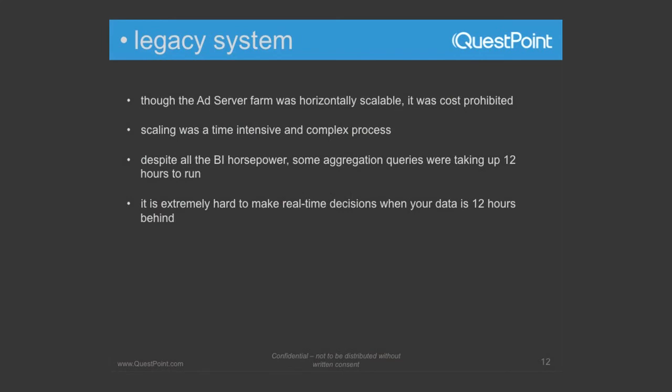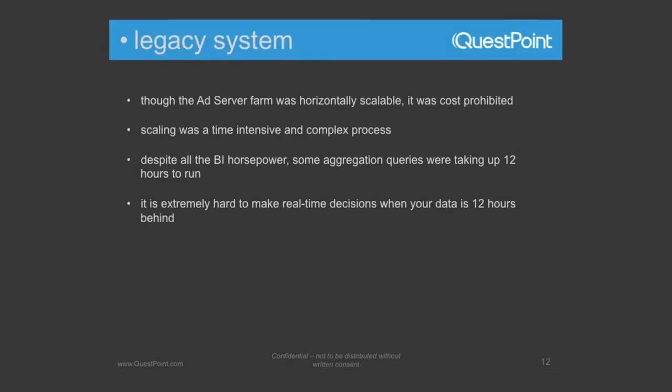Though the ad server was horizontally scalable, it was cost prohibitive. On top of the hardware, the Fusion IOs, the RAM, and Windows charging you constantly — I used to work for them, I can say that — it just doesn't make sense. The scaling was intensive and complex. We had to use replication to get the buckets across in the sharding system, and then clean up the buckets in the previous systems. Not good business. And despite all that horsepower on the R910, aggregation queries — simple summations and counts on billions of rows — were taking up to 12 hours. We have really good DBAs running index seeks. It's just that processing simple aggregations in 12 hours is not real-time decisions. You've already missed the boat.